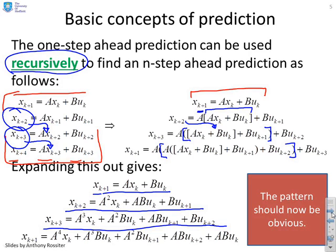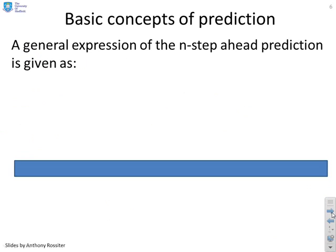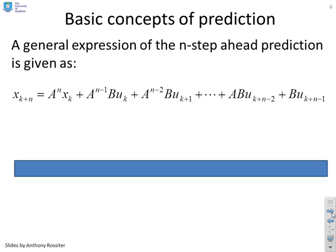We can now write down a general expression for the n-step-ahead prediction. If I wanted x_{k+n}, you'll see it's A^n times x_k, A^{n-1}B times u_k, A^{n-2}B times u_{k+1}, and so on, all the way down to B times u_{k+n-1}. I hope the pattern is obvious there, and you can easily prove it to yourself.